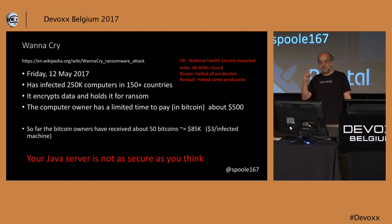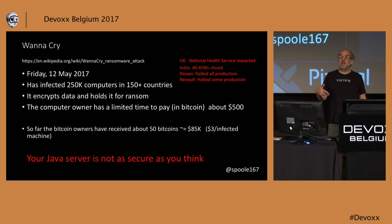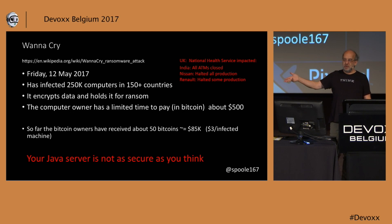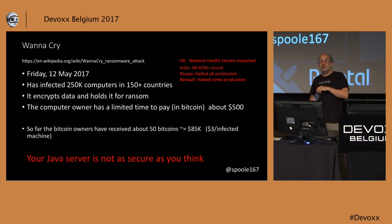The WannaCry attackers used anonymous Bitcoin so they could make money without being tracked — that's another reason ransomware is taking off. But ironically, the guys who did it said it was a failure for them because they didn't make very much money. Most people didn't pay, and they said they'd have to try better next time.